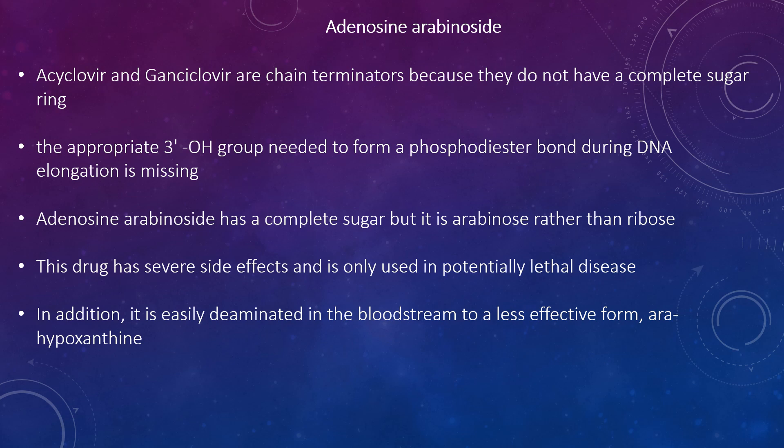Looking at adenine arabinoside (ara-A): acyclovir and ganciclovir are chain terminators because they do not have a complete sugar ring — the appropriate 3'-OH group needed to form a phosphodiester bond during DNA elongation is missing. Adenine arabinoside has a complete sugar but it is arabinose instead of ribose. This drug has severe side effects and is only used in potentially lethal disease. In addition, it is easily deaminated in the bloodstream to a less effective form, ara-hypoxanthine.